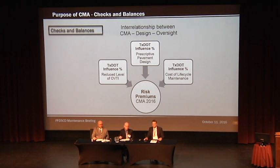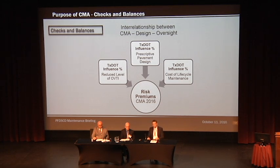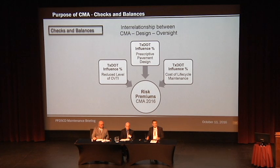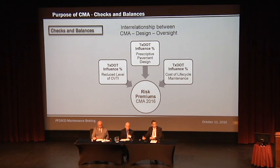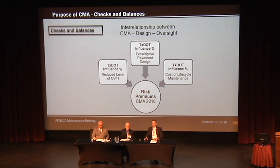If the DB contractor decides how thin or how deep the pavement is — making that decision during design and construction — they essentially make a decision as to how much inspection goes into that design. At the end, the CMA's performance requirements, the minimum performance requirements, essentially say: the decisions you, DB contractor, made during design and construction — you're going to be held responsible to meet these minimum requirements during the O&M term. What this slide is trying to represent is that as you make decisions in the three phases of design, construction, and the O&M period, the CMA is essentially how the department ensures the DB contractor assumes the risks and stands behind the product they've developed.